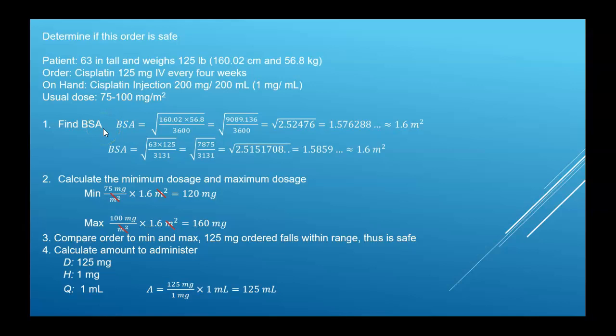So if we find the BSA, again I used both the metric method and the household method, and you see you end up with 1.6 meters squared again. Then you have to find the minimum and the maximum. So the minimum is 75 milligram per meter squared, the maximum is 100 milligram per meter squared. Take each, multiplied by the BSA, and you get the minimum dosage and the maximum.